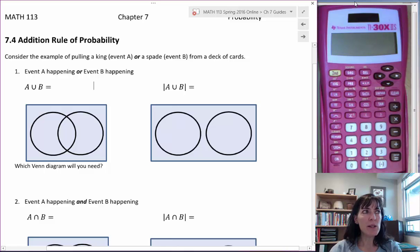So first we want to consider event A happening or, and that's the mathematical or, event B happening. That we'll call a union. And A union B is a king or spades.